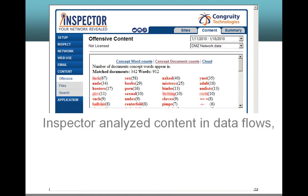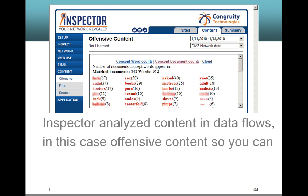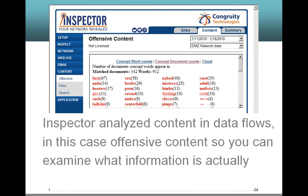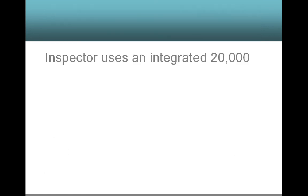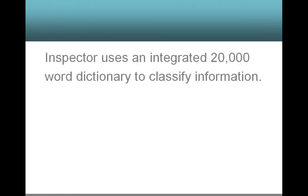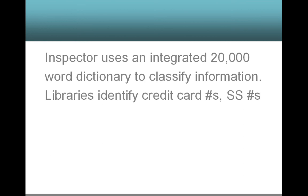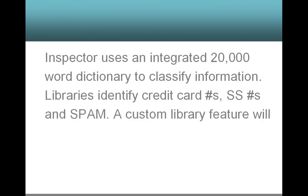Inspector analyzes content in data flows — in this case, offensive content — so you can examine what information is actually flowing into your local area network. Inspector uses an integrated 20,000-word dictionary to classify information. Libraries identify credit card numbers, social security numbers, and spam.